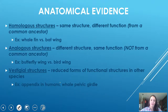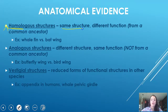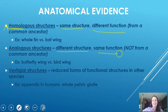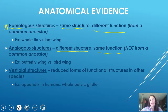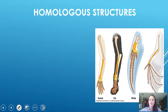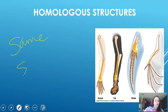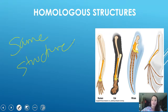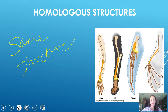There is also anatomical evidence, which includes three different things. Homologous structures — the prefix 'homo' meaning same — have the same structure but a different function. For example, the human, cat, whale, and bat all have the same bones, color-coded here, but they're used for vastly different things. Analogous is the opposite: different structure but the same function.